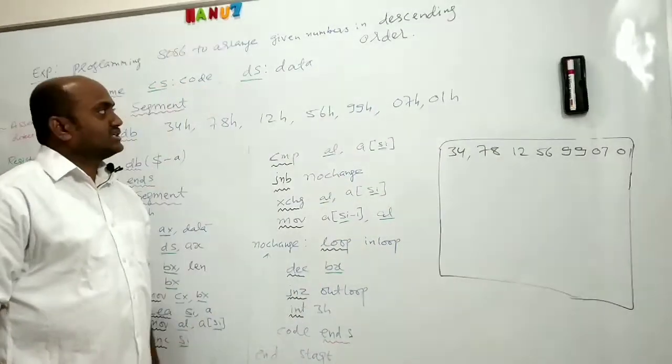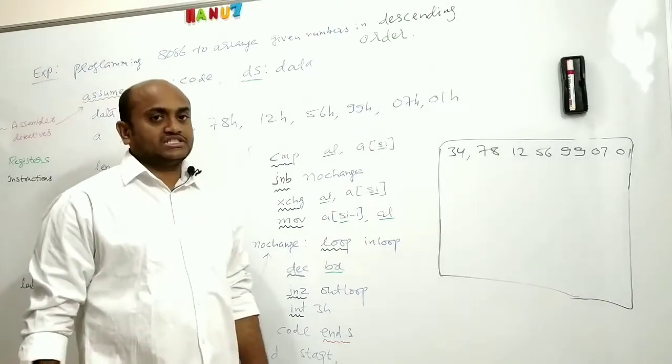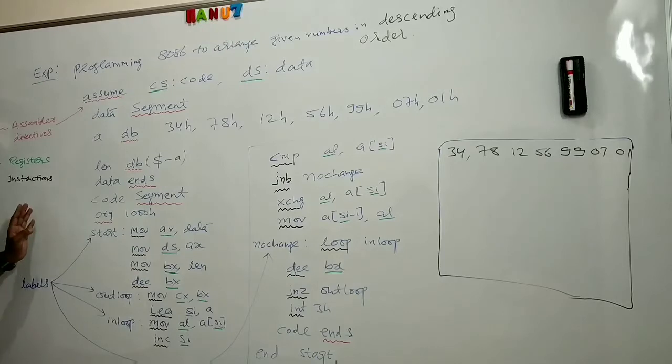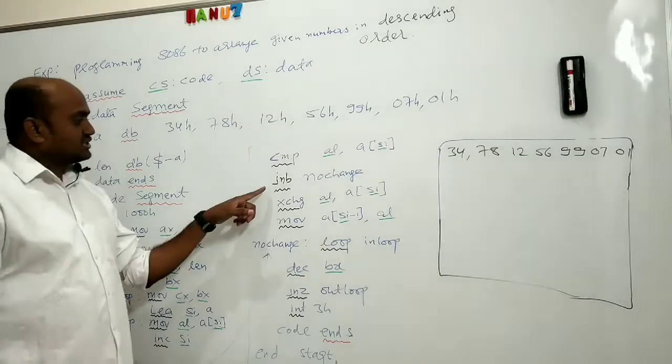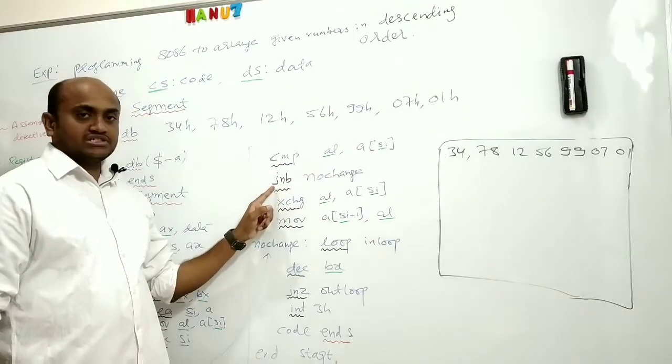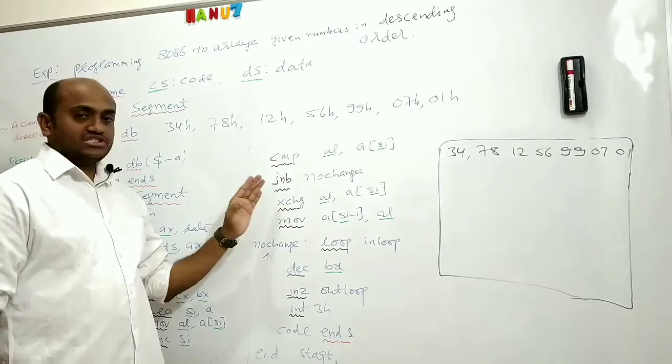In last video we have seen how to arrange the given numbers in ascending order. If you look at the program, it remains the same. Only the change you can observe here is for descending order, I changed only this instruction to JNB instead of J.